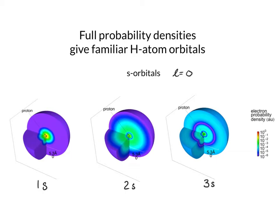These are the s orbitals for the first three n quantum numbers: 1, 2, and 3. For the 1s orbital, remember that in the radial probability density there are no radial nodes. If I start at the proton and walk out to the outside of that spherically symmetric distribution in any direction, my probability goes from yellow being quite high all the way out to purple being close to zero. I smoothly go from a maximum to a minimum, and there are no radial nodes.